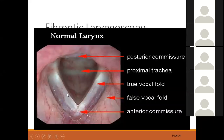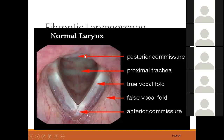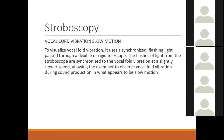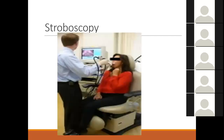With fibreoptic laryngoscopy, the left side of the patient is on the left of the image and the right side on the right. You can see the anterior commissure, vocal cords, trachea, false cords, and posterior commissure. Stroboscopy slows the movement of the vocal cords and is useful for speech therapists assessing vocal cord movement in chronic non-specific laryngitis. We do not have a stroboscope in our department but we do have fibreoptic laryngoscopy.